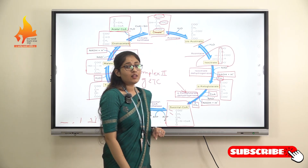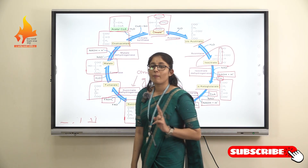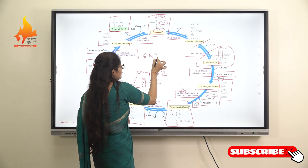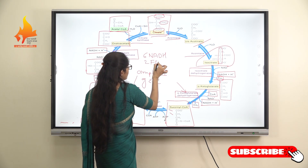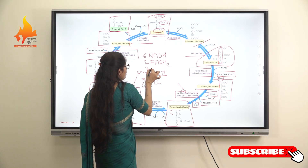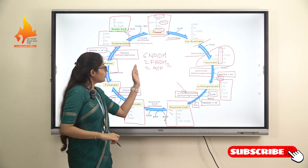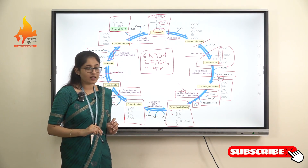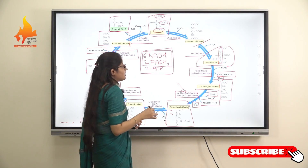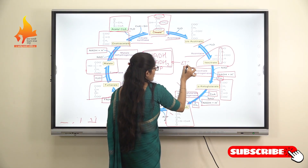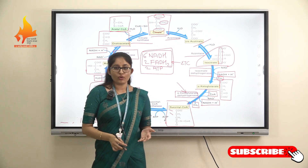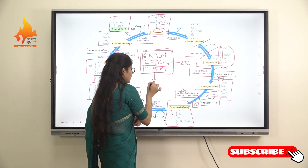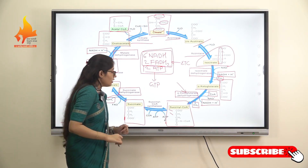In the Krebs cycle, in all, 2 acetyl-CoA molecules take part. So there is generation of 6 NADH, 2 FADH2, and 2 ATP. There is generation of all these high-energy compounds in the Krebs cycle. The NADH and FADH2 participate in the electron transport chain, acting as electron donors. There is also direct generation of ATP through GTP.